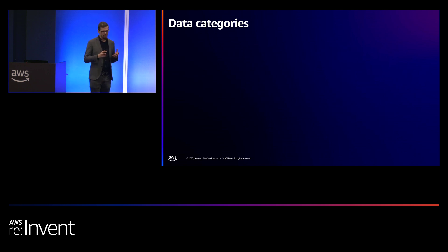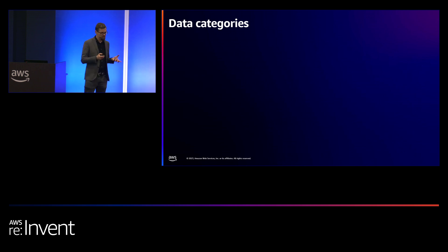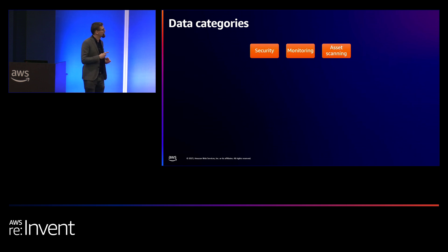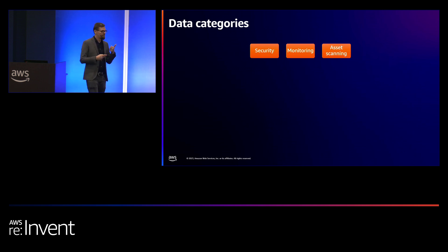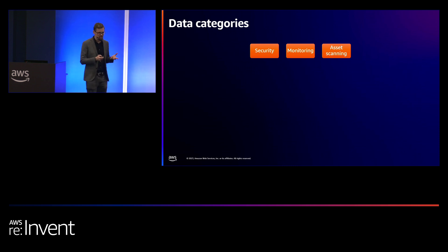Then we have data categories — the types of data that different external tools would be interested in. If we start with security tools, we have security tools, monitoring tools, and asset scanning tools. What type of data would a security tool be interested in? What would a monitoring tool be interested in? And the same thing for asset scanning.